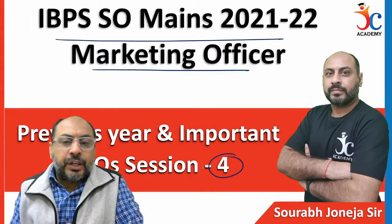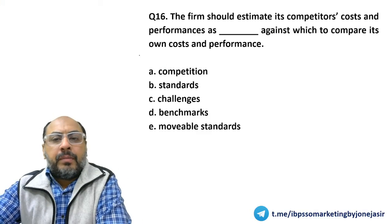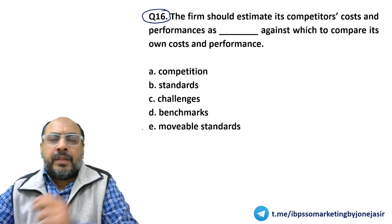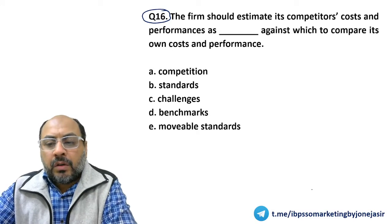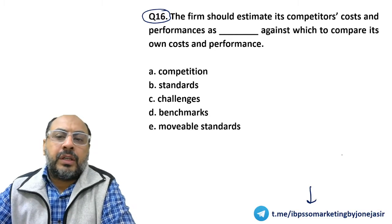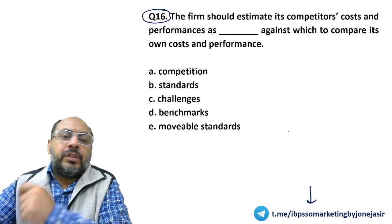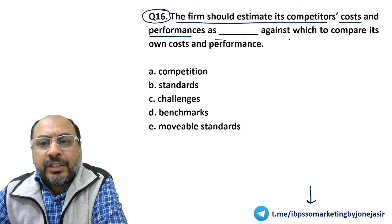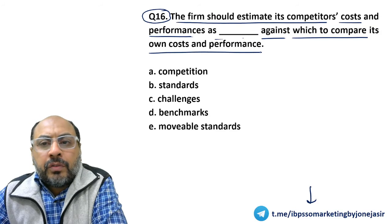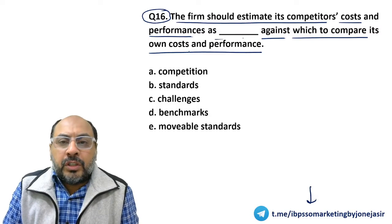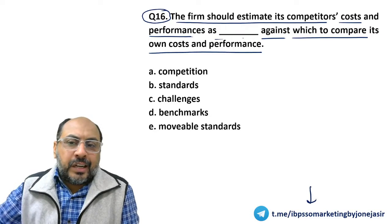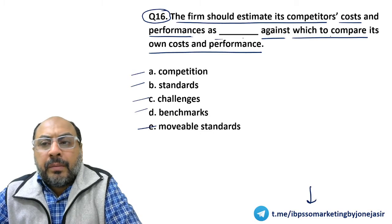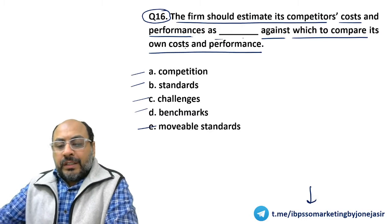In today's set of questions, I am talking about the series starting from question number 16. The question is: the firm should estimate its competitors' costs and performances as dash against which to compare its own costs and performance. Should they consider them as competition, standards, challenges, benchmarks, or moveable standards?